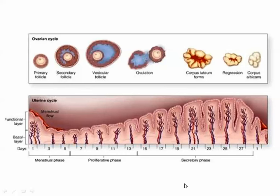The menstrual cycle starts with the menstrual phase, followed by the proliferative phase, and then the secretory phase. The ovarian cycle starts with the primary follicle, the secondary follicle, and the vesicular follicle which ovulates and transforms into the corpus luteum, then progresses to the corpus albicans. This will be touched upon in detail in the section on ovarian pathology.